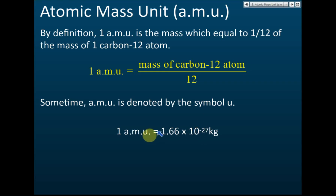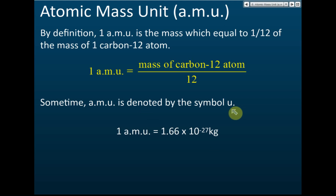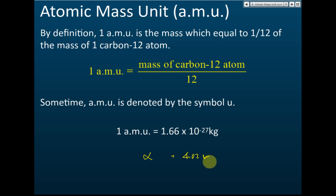Usually this will be given: one AMU equals 1.66 times 10 to the power of negative 27 kg. This will be given. The AMU is denoted by the symbol u. For example, if they tell you the mass of an alpha particle is 4.02u, you should know that this is the atomic mass unit.